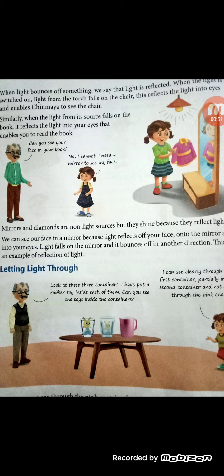Look at these — we have taken three types of containers and kept them on the table. These containers are of different materials. Grandfather is saying to his granddaughter: 'Look at these three containers, I have put a rubber toy inside each of them — can you see the toys?' The granddaughter says she can see clearly through the first container, partially through the second container, and not at all through the pink container.